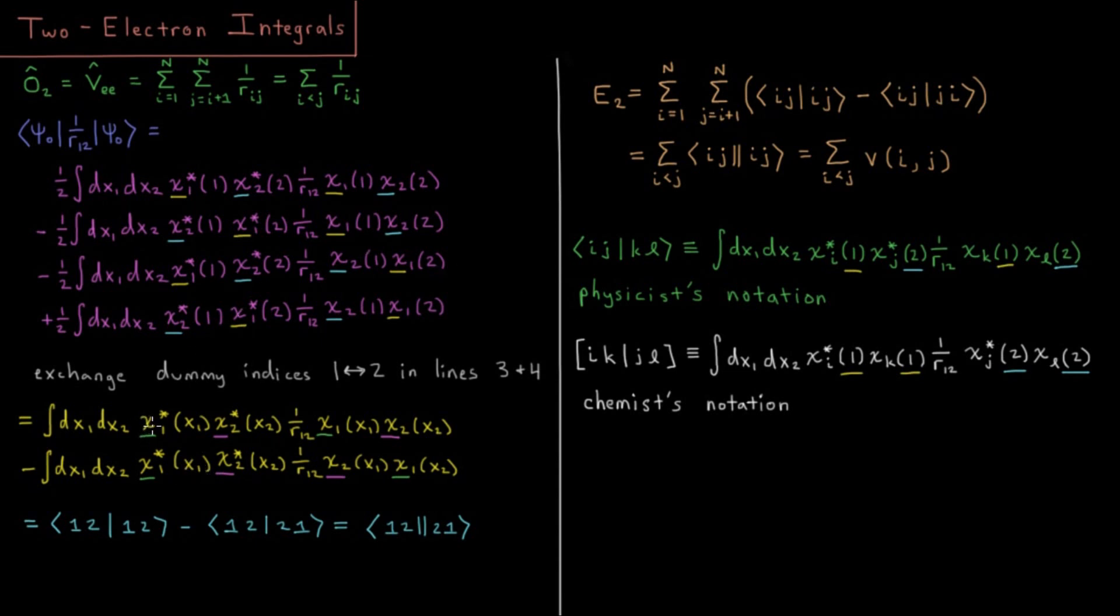This is going to give rise to two different types of integrals, one which we'll indicate as this one, two, one, two, where we have this Dirac bracket now, but instead of having one term on the right and the left, we have two terms on each side. So we have this one, two, one, two, indicating which spin orbital each of the electrons is in of the four terms. And then we have this one, two, two, one. Altogether, we're going to combine this into a double term here, which we'll call one, two, double bar, two, one, which we'll discuss more about in a second.